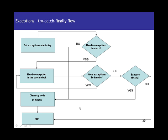Let's look at this visually — what all you can do with exceptions and the flow in a try-catch block. First, you put all your exception-prone code in a try block. Then you check: do you want to handle exceptions in the catch block? It's not mandatory to have a catch block as long as you have a finally block. You can have: try-catch, try with multiple catches and finally, try-catch-finally, or try-finally.